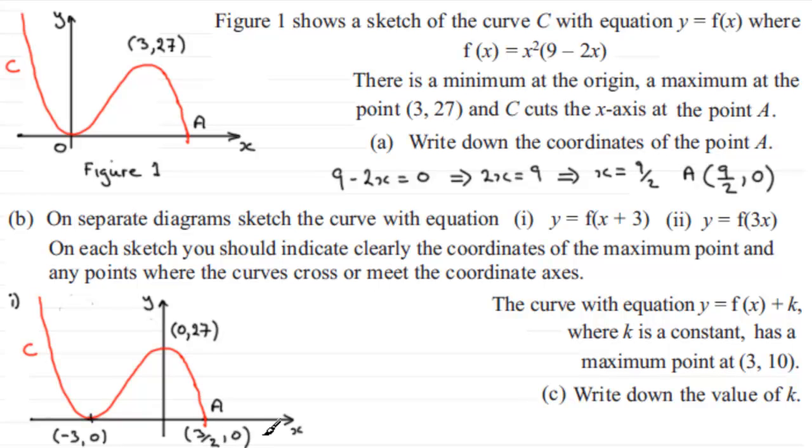In part two we've got to sketch the graph of y equals f of 3x. We set up our axes and draw on the original graph. What does a transformation of y equals f of 3x actually do to this graph? It stretches it by a factor of a third parallel to the x-axis with the y-axis staying invariant. It basically squashes this curve toward the y-axis, and any points on the curve stay put.